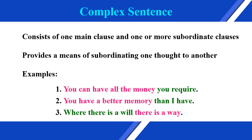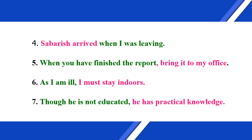The third one is complex sentence. A complex sentence consists of one main clause and one or more subordinate clauses. It provides a means of subordinating one thought to another. Examples: you can have all the money you require; you have a better memory than I have; where there is a will, there is a way; Sabarish arrived when I was leaving; when you have finished the report, bring it to my office; as I am ill, I must stay indoors; though he is not educated, he has practical knowledge. In these sentences, the pink parts are main clauses and the remaining green parts are subordinate clauses.